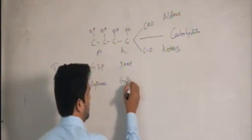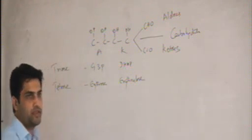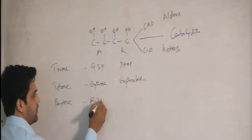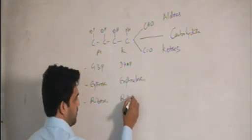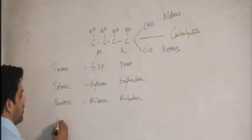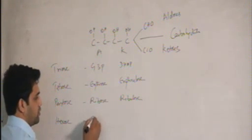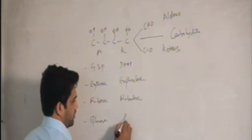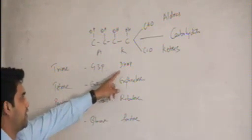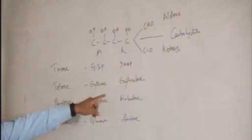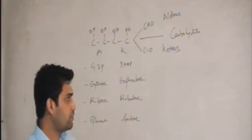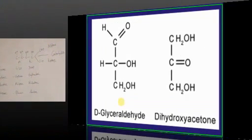The keto isomer of erythrose is erythrulose. For pentoses (5-carbon), the aldose is ribose and the keto isomer is ribulose. For hexoses (6-carbon), the aldose is glucose and the keto isomer is fructose. Summary of aldo-keto isomers: triose — glyceraldehyde-3-phosphate and DHAP; tetrose — erythrose and erythrulose; pentose — ribose and ribulose; hexose — glucose and fructose.